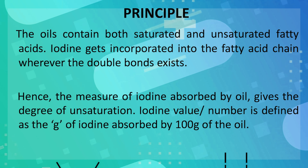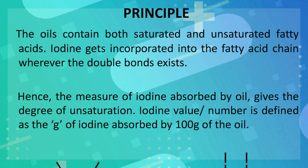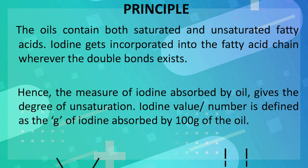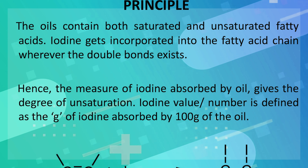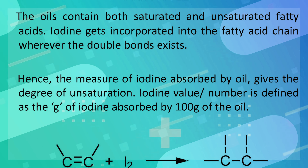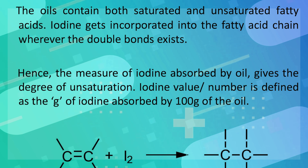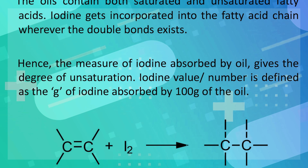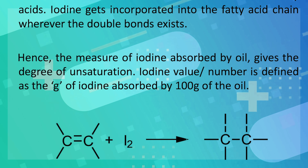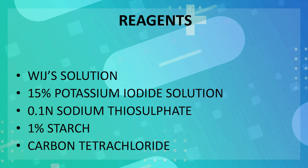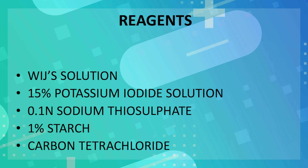The oils contain both saturated and unsaturated fatty acids. Iodine gets incorporated into the fatty acid wherever the double bond exists. Hence, the measure of iodine absorbed by oil gives the degree of unsaturation. Iodine value, also called iodine number, is defined as the grams of iodine absorbed by 100 grams of oil. The following reagents are required to estimate the iodine value of oils.